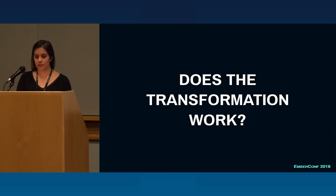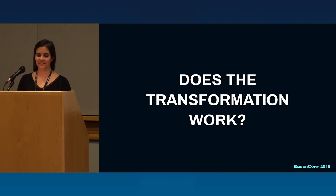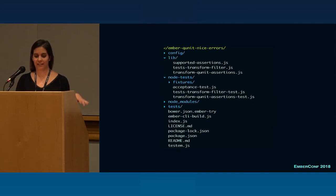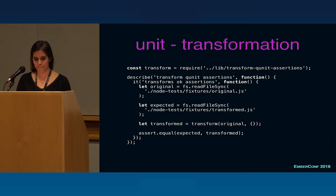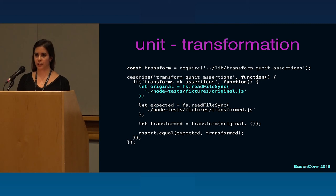We need to test three things. First, that the AST transformation actually works. Our files are in a lib folder. We have the transformation and the unit test for it. Since it's a pure code function, we require it, have a set of fixtures with the original test file and the one we expect, read both, apply our transformation, and check that both match.